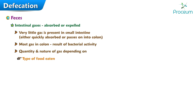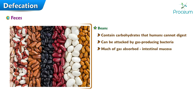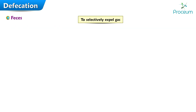Some foods, such as beans, contain types of carbohydrates that humans cannot digest but that can be attacked by gas-producing bacteria. Much of the gas is absorbed through the intestinal mucosa; the rest is expelled through the anus.